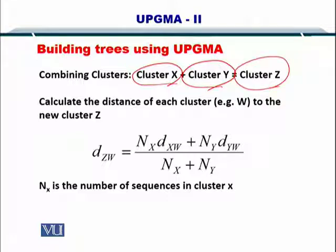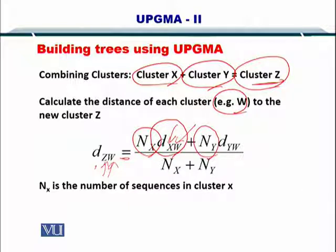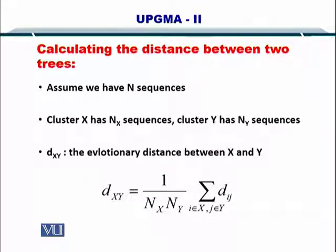The distance between cluster Z and any other sequence W is given by d_ZW equals the number of sequences in X multiplied by the distance between X and W. Remember X is a sequence and W is a sequence as well. Plus the number of sequences in Y times the distance between Y and W. Using this formula you could create clusters, and the second part of UPGMA was to combine the trees.